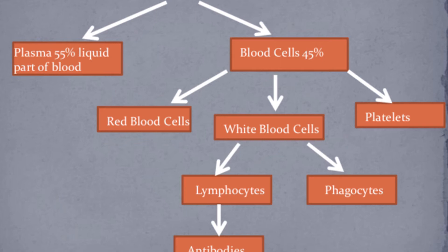T lymphocytes are specialized white cells that identify and destroy invading organisms such as bacteria and viruses. Some T lymphocytes directly destroy invading organisms, whereas others regulate the immune system by directing immune responses.